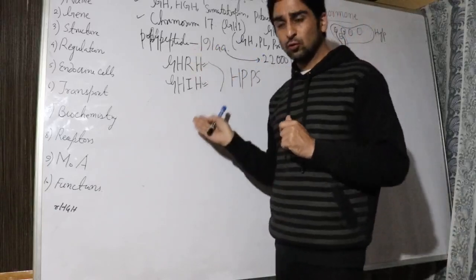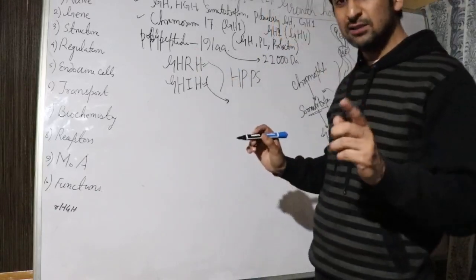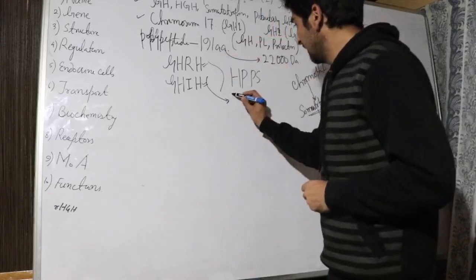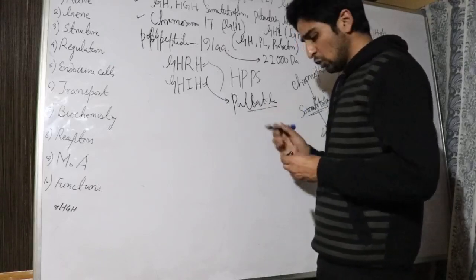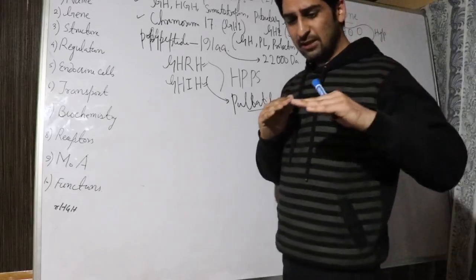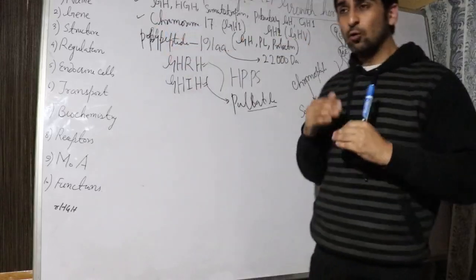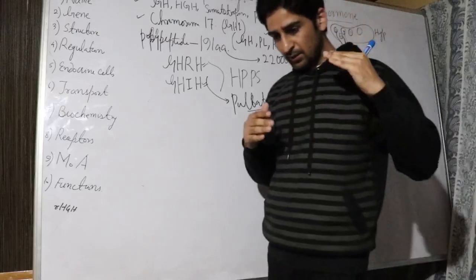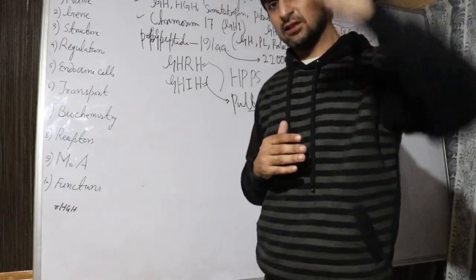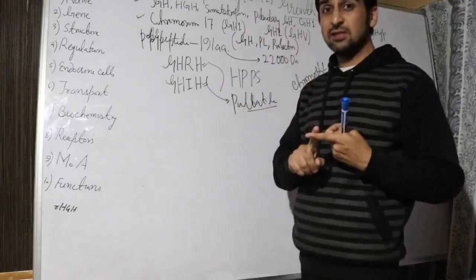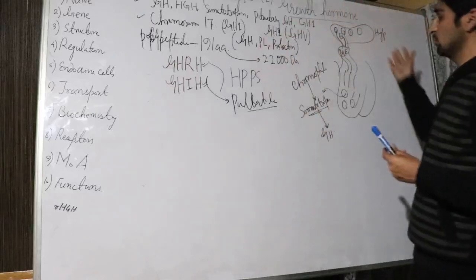You should remember that growth hormone is not released continuously at one level — it is released pulsatily, in pulses. The level rises and peaks, then comes down again. During sleep, there is a notable surge in growth hormone secretion. This pulsatile release is very important to remember. That concludes the regulation of growth hormone release.